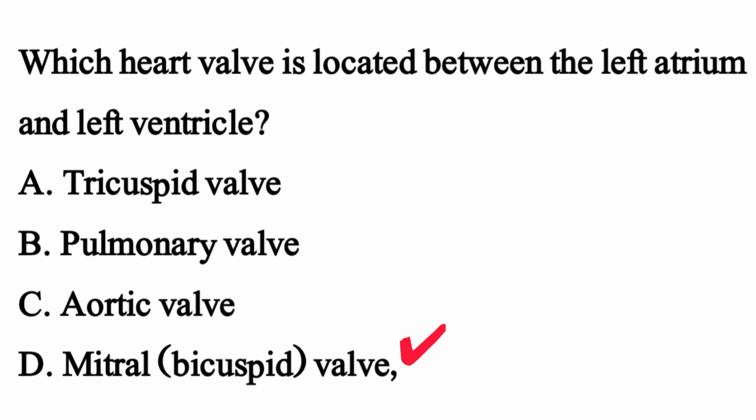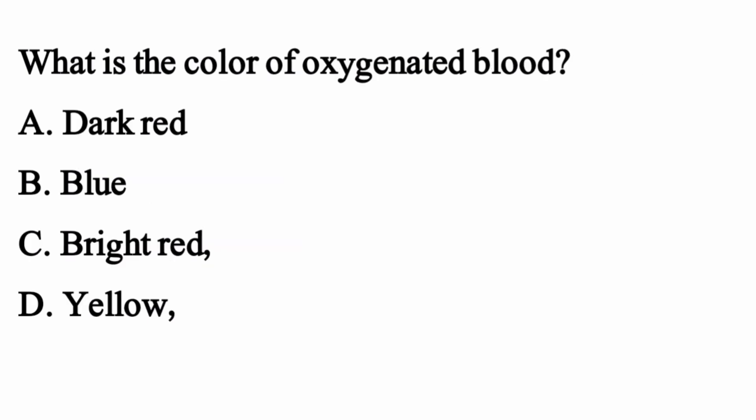The mitral (bicuspid) valve. What is the color of oxygenated blood? The right option is option C: bright red.